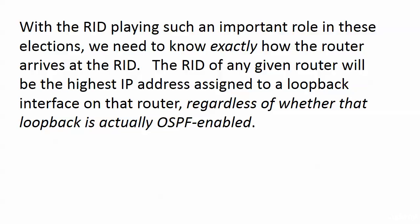What we need to know is exactly how the router comes up with its RID. It can be hard-coded with the router ID command. But by default, the RID of any OSPF-speaking router is going to be the highest IP address assigned to a loopback interface on that router, regardless of whether that loopback is actually OSPF enabled. That's a critical rule - your first thought might be that an interface would have to be OSPF enabled for its IP to be used as the RID, but it doesn't.